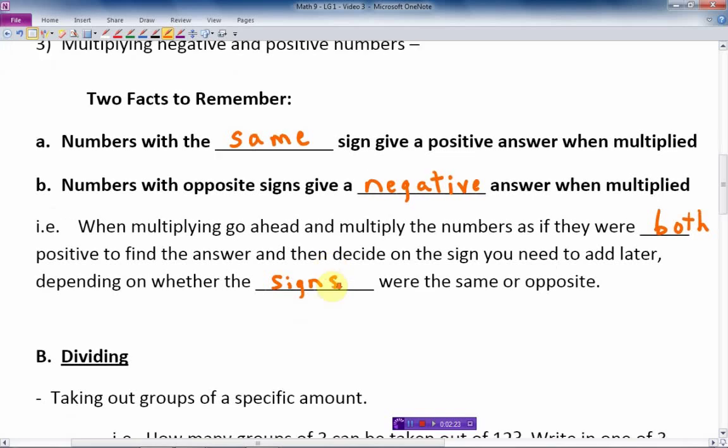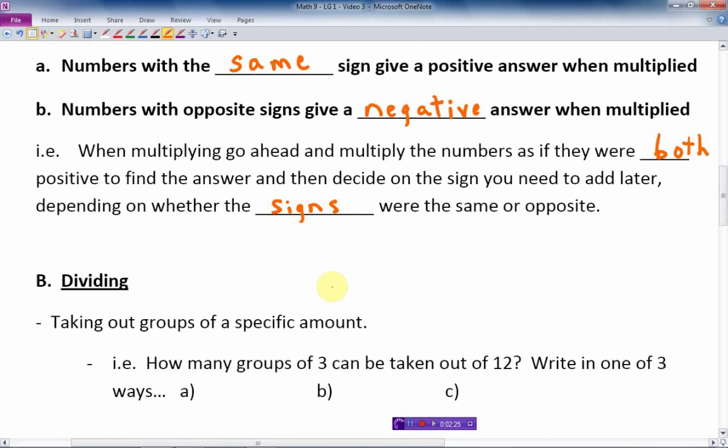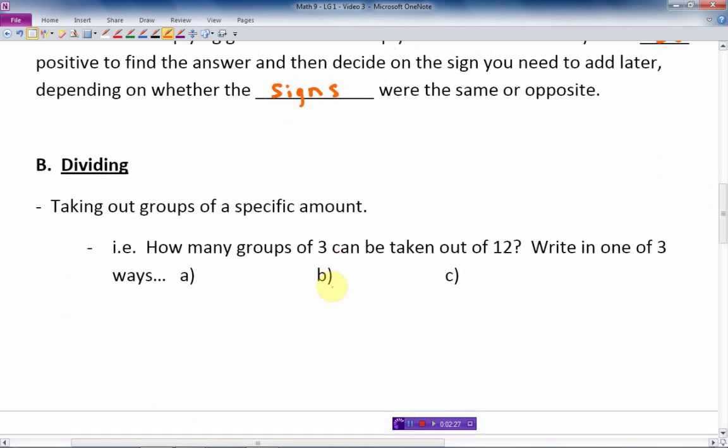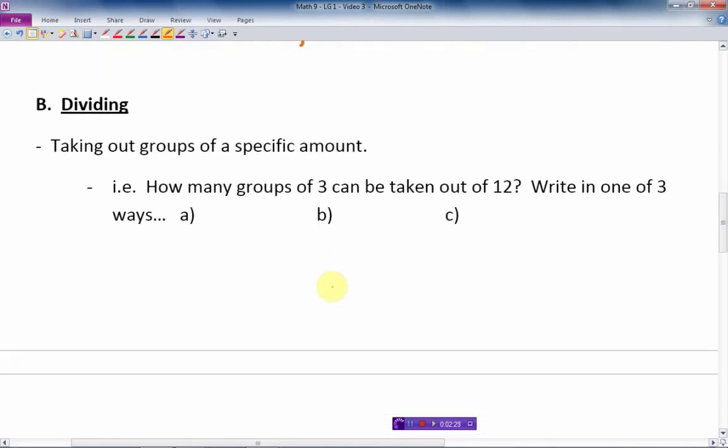So we'll talk about some examples in a minute here. But first, let's just briefly review dividing. Dividing is taking out groups of a specific amount.